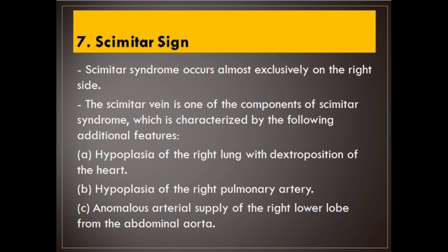Scimitar syndrome occurs almost exclusively on the right side. The scimitar vein is one of the components of scimitar syndrome, which is characterized by the following additional features: (a) hypoplasia of the right lung with dextroposition of the heart, (b) hypoplasia of the pulmonary artery, and (c) anomalous arterial supply of the right lower lobe from the abdominal aorta.